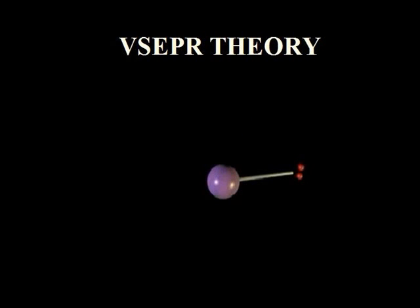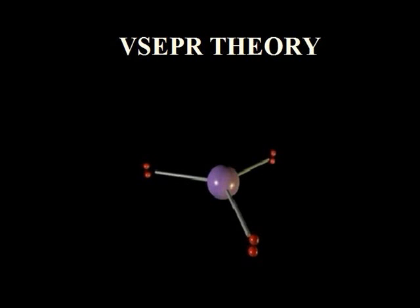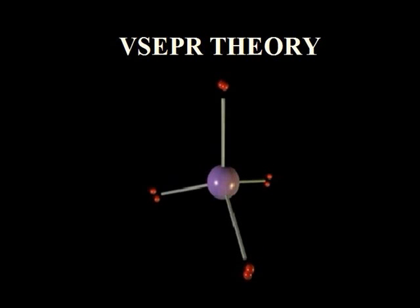If you have only one atom attached to the central atom, it will be attracted to the nucleus. Two atoms attached to the central atom will arrange themselves as far apart as possible to reduce their repulsions, so they will take up 180 degrees from each other. Three bonding pairs around the central atom will take a trigonal planar arrangement at 120 degrees bond angles. Four atoms around the central atom will arrange themselves in a tetrahedral shape — 109 degrees — the furthest apart they can be.